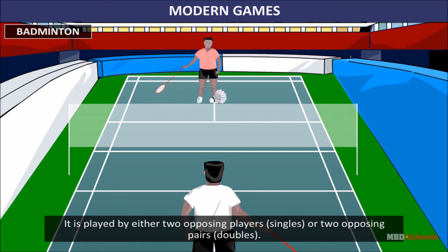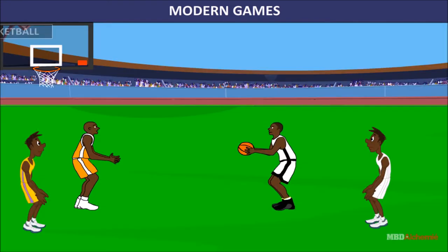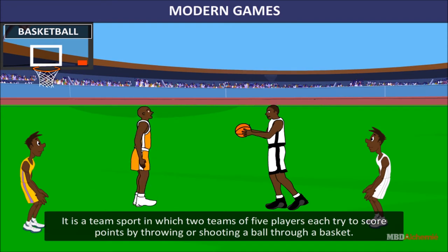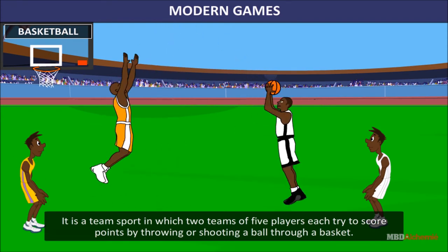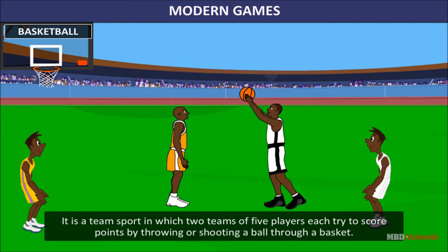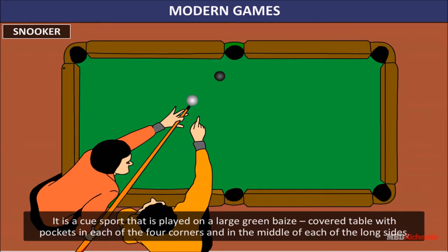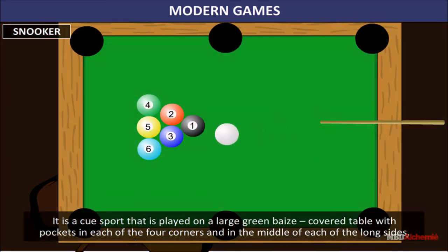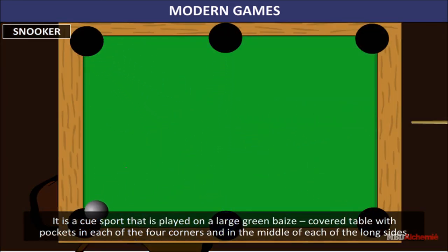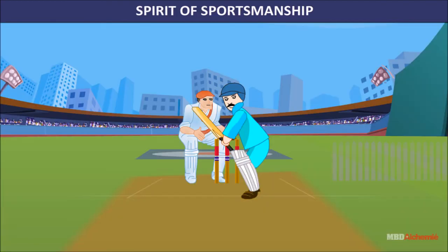Badminton requires a shuttlecock and rackets, and can be played indoors as well as outdoors. Basketball is a team sport in which two teams of five players each try to score points by throwing or shooting a ball through a basket. Snooker is a cue sport played on a large green baize-covered table with pockets in each of the four corners and in the middle of each of the long sides.